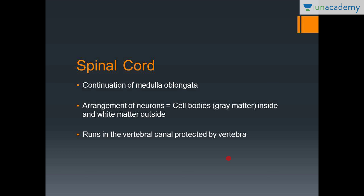In the spinal cord, the cell bodies are on the inside and the white matter, or the axons, are on the outside. The cell bodies appear gray because of the presence of lipofuscin, and the white matter appears white because of the presence of myelin. The spinal cord runs in the vertebral canal, which is protected by the vertebrae.